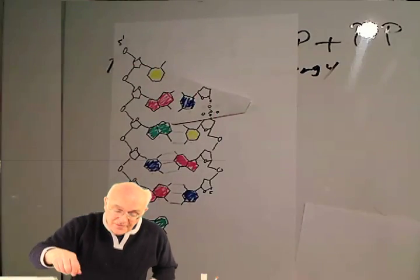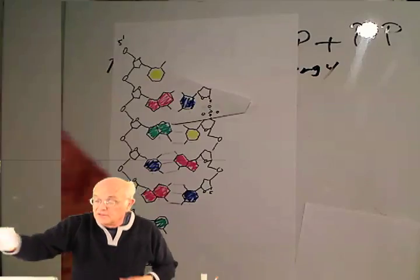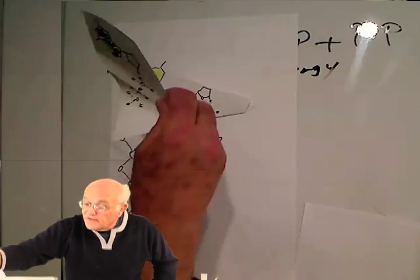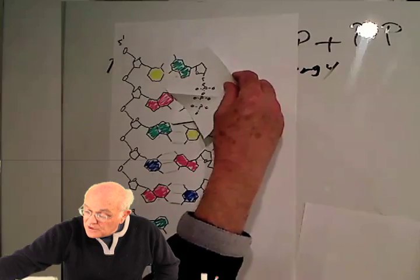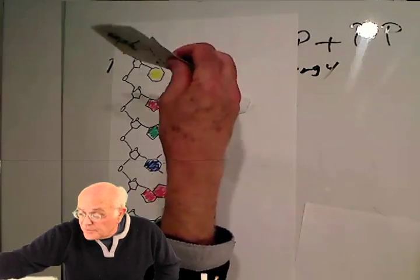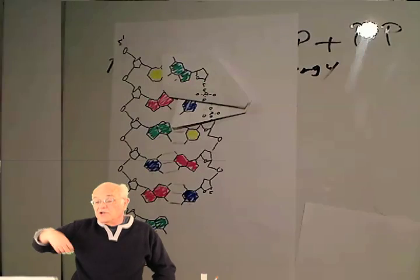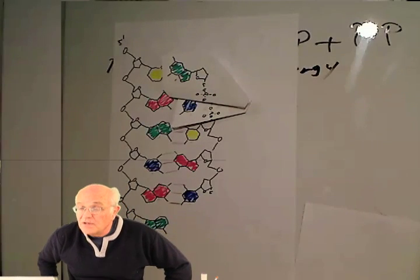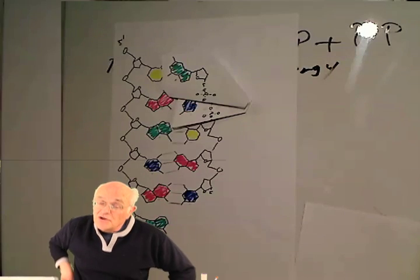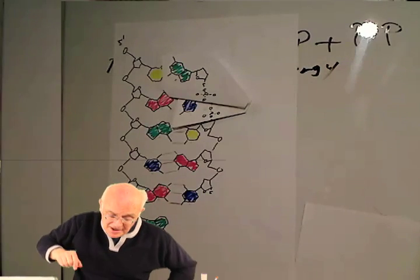We have a thymine. The thymine wants an adenine. Okay, so we have our triphosphate. The triphosphate will go on here. Two phosphates will be cleaved off, and this guy will go on here. So the five prime of the trinucleotide goes against the three prime that's already there.